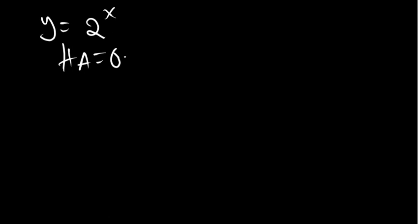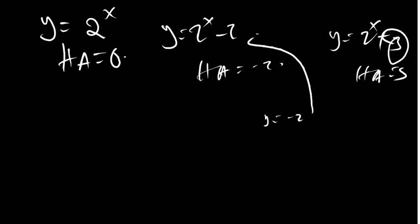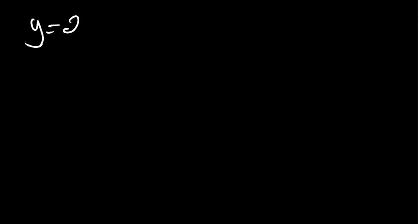But if we have something — let's say y is equal to 2 to the power x minus 2 — then the horizontal asymptote is negative 2. If we have y is equal to 2 to the power x plus 3, then the horizontal asymptote is 3. You just take that constant — that is your horizontal asymptote. So for y equals 2 to the power x, the horizontal asymptote is zero.